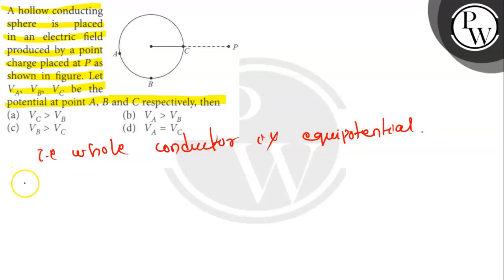Since the sphere is a conductor and all three points A, B and C lie on its surface which is equipotential. Therefore,